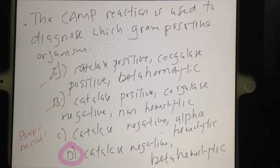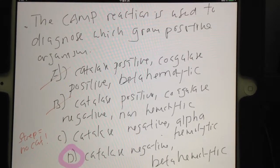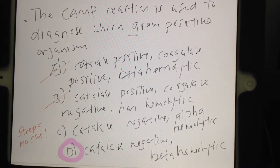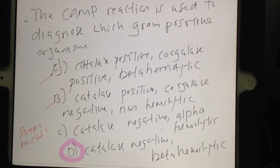We're going to talk about the CAMP reaction one more time here, used to diagnose which gram-positive organism. So this time we're given the catalase and coagulase results, and whether it is beta-hemolytic or not.